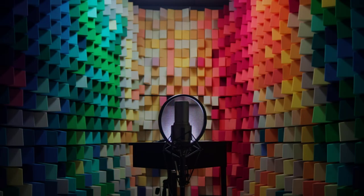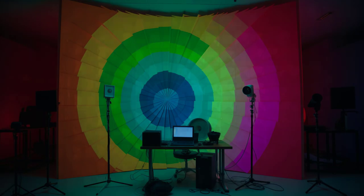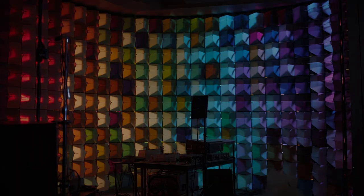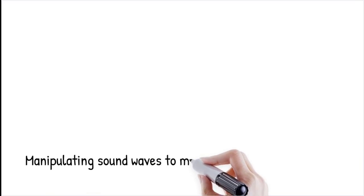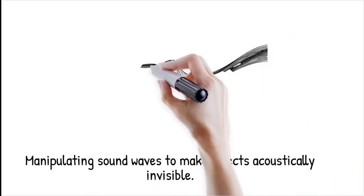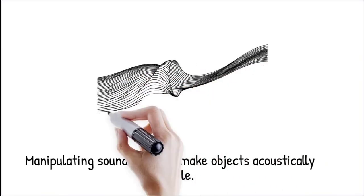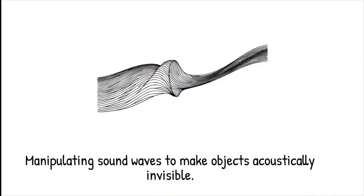Acoustic cloaking is an advanced concept in wave physics that involves manipulating sound waves so they bend around an object, effectively making it acoustically invisible. This is achieved using specially designed materials, known as acoustic metamaterials, that guide sound waves around an object.